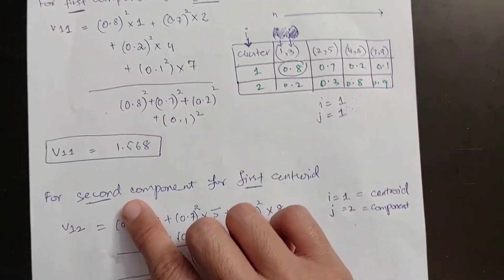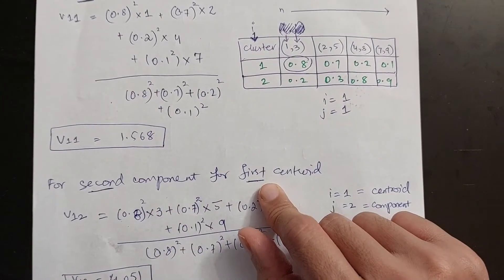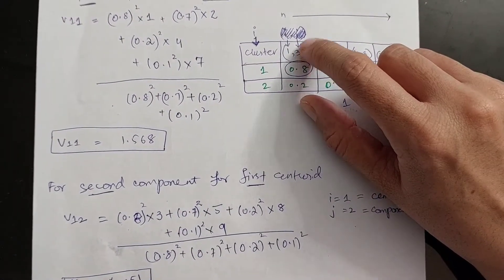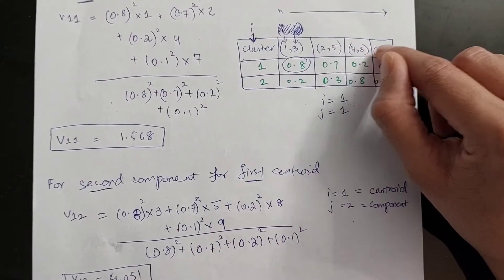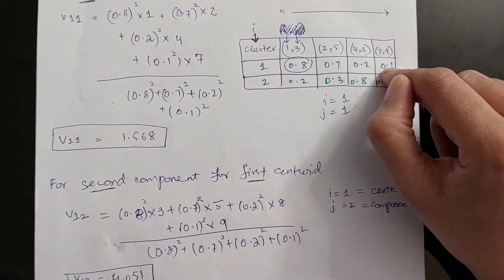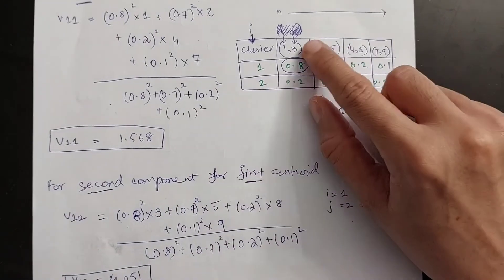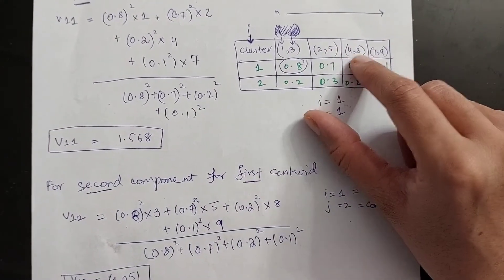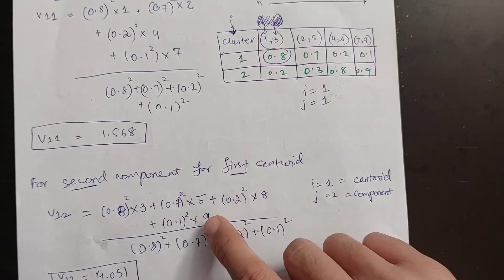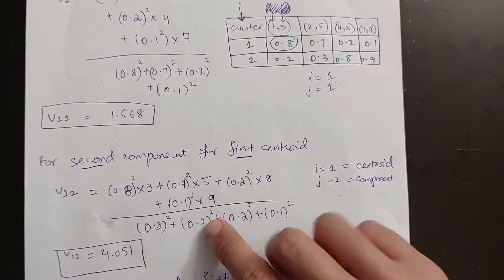Now we calculate the second component of the first centroid. For the second component, we take the second components of the data points — 3, 5, 8, and 9 — and multiply by the same percentage values with the square applied. Then we calculate the first component of the second centroid (i=2, j=1), using the second cluster's percentages with the first components 1, 2, 4, and 7. For the second centroid's second component (i=2, j=2), we take the second components 3, 5, 8, and 9 with the second cluster's percentages. The answer is 8.215.